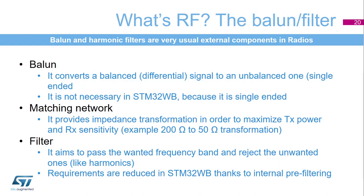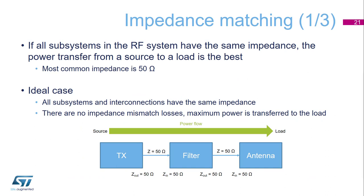Balun and harmonic filters are very common external components in radios. A balun converts a balanced signal to an unbalanced one — from differential to single-ended. The matching network provides impedance transformation in order to maximize transmit power and receive sensitivity. A filter aims to pass the wanted frequency band and reject unwanted ones, for example harmonics. Requirements are reduced in STM32WB thanks to internal pre-filtering. The most common impedance in RF systems is 50 ohms.